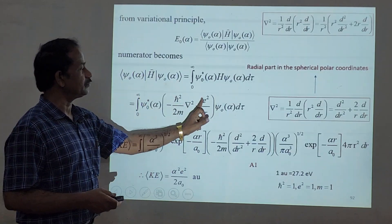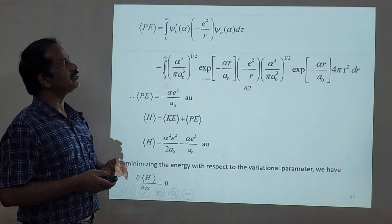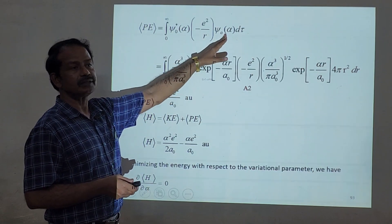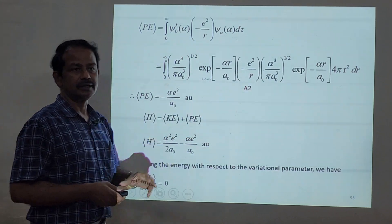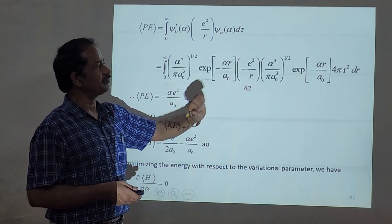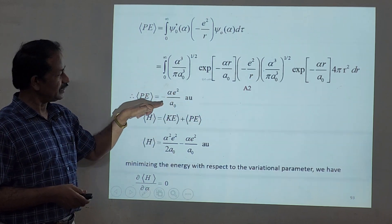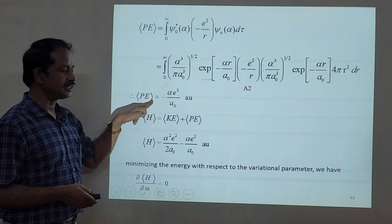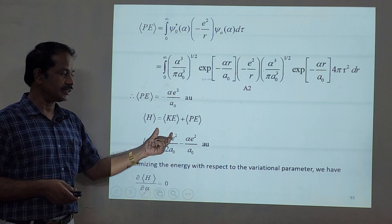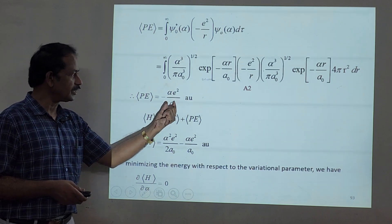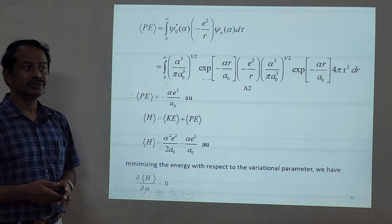The potential energy term is -e²/r, sandwiched between ψ* and ψ. Evaluating that integral — which is left as an assignment — gives the potential energy equal to -αe²/a₀. Therefore the total energy E = kinetic energy + potential energy = α²e²/(2a₀) - αe²/a₀.